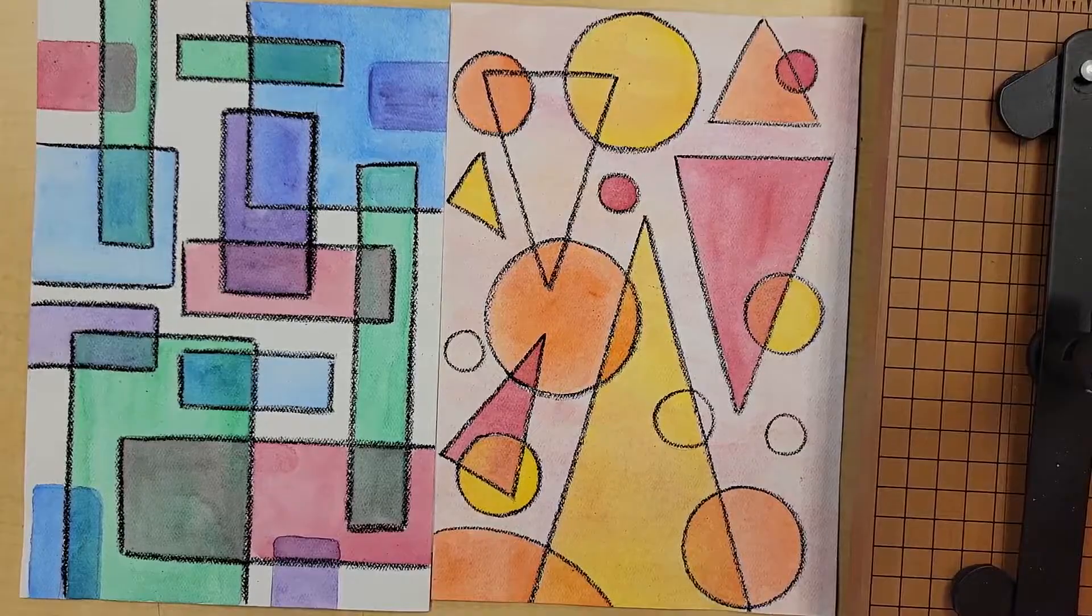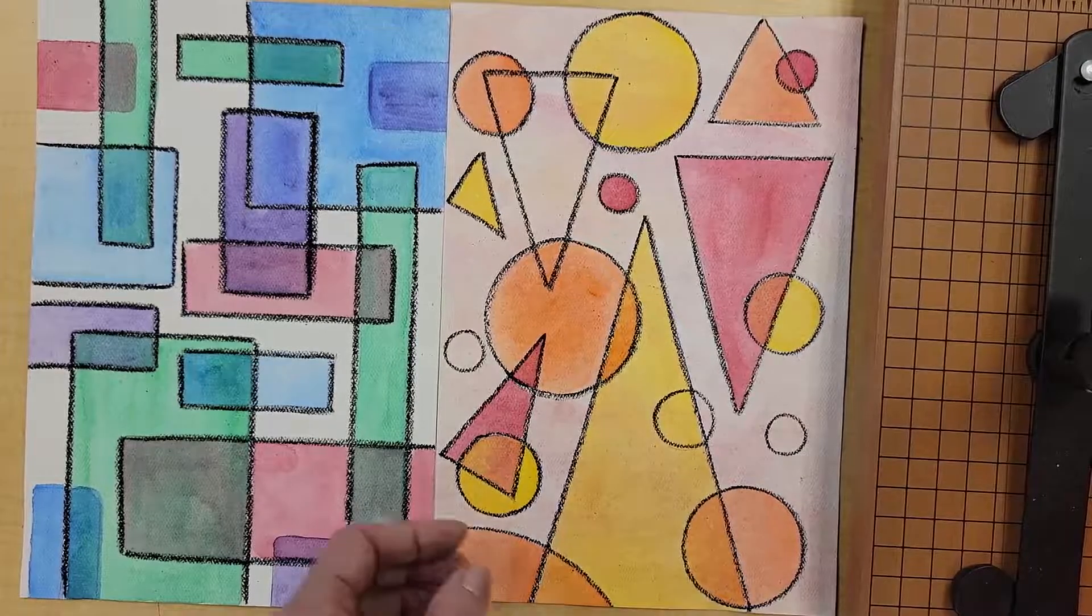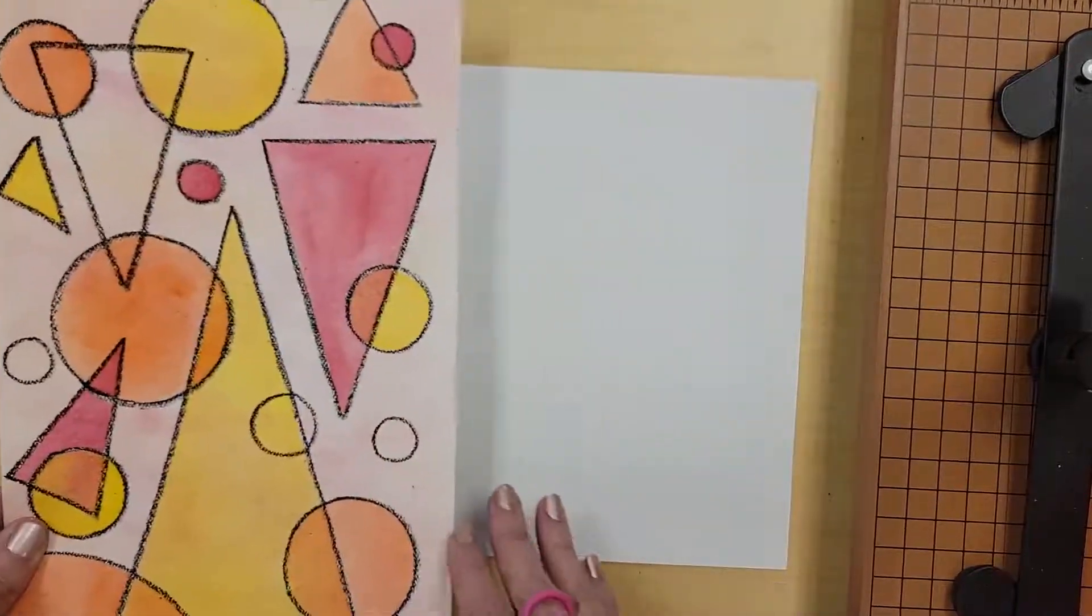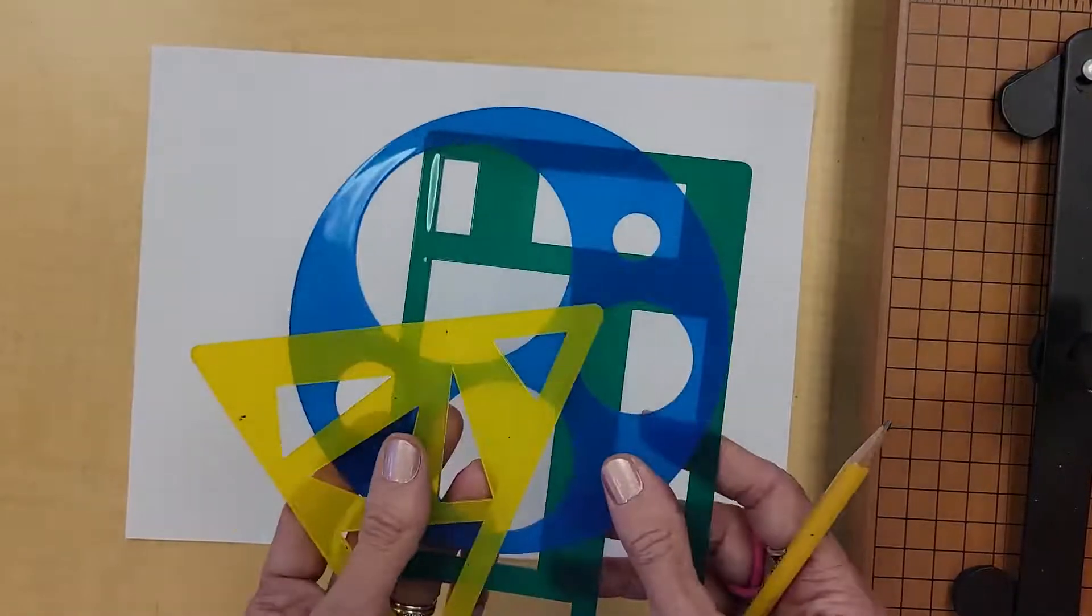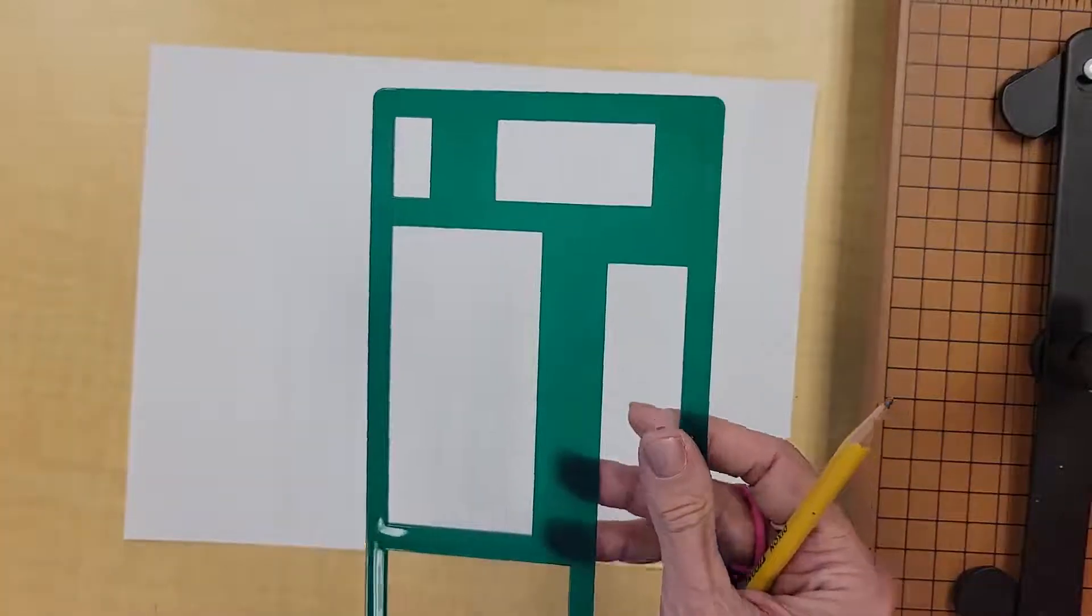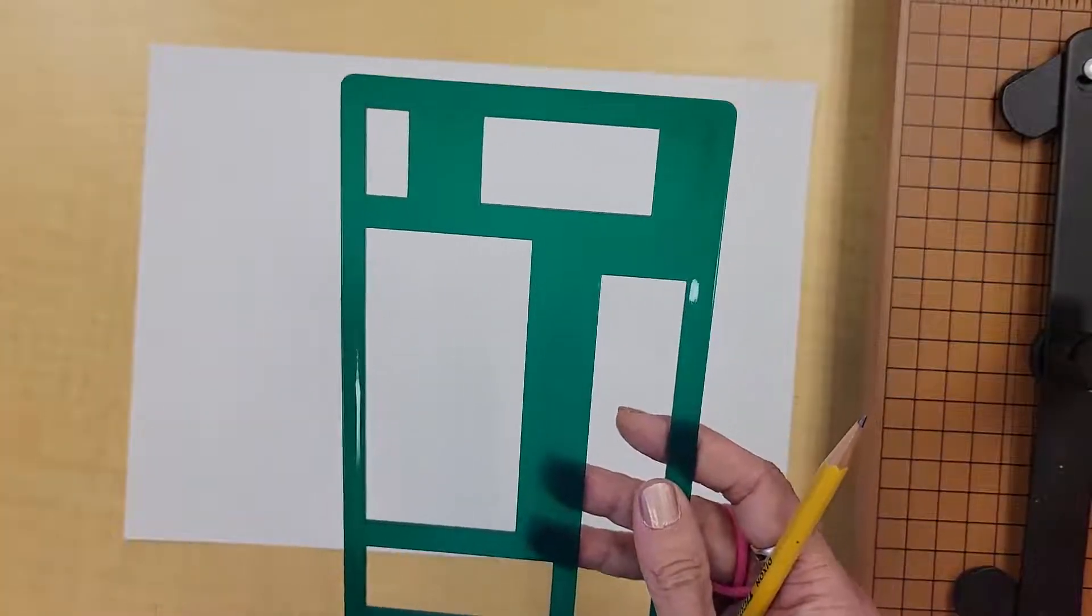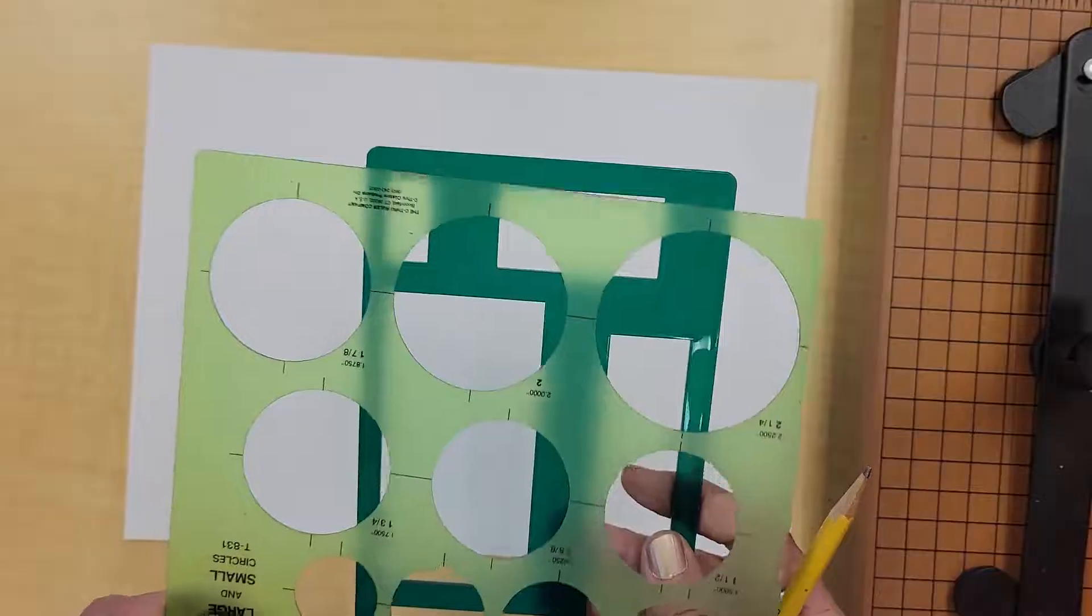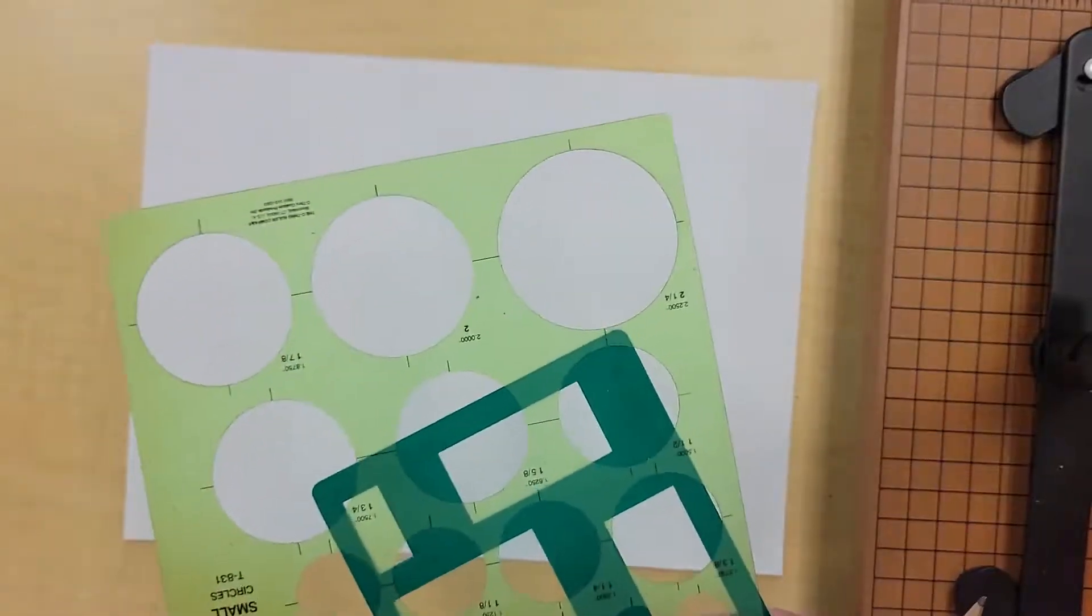So once you're ready, you can get started. The first thing you have to do is decide which tools you want to use. I've given you a lot of options at your tables. You have these plastic tools that have different shapes, you have the circle templates if you're using circles.